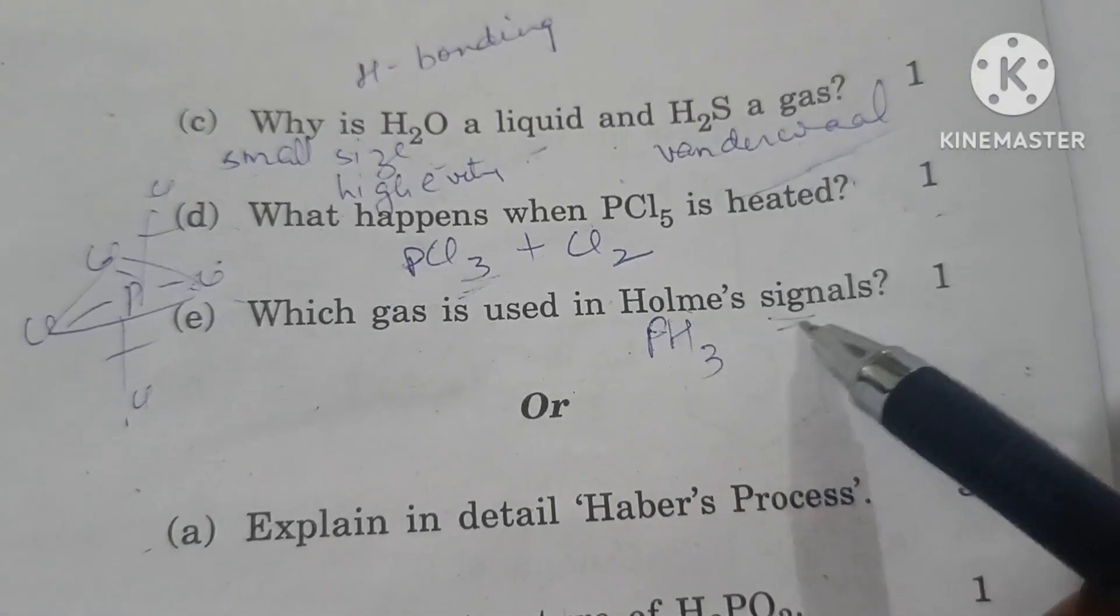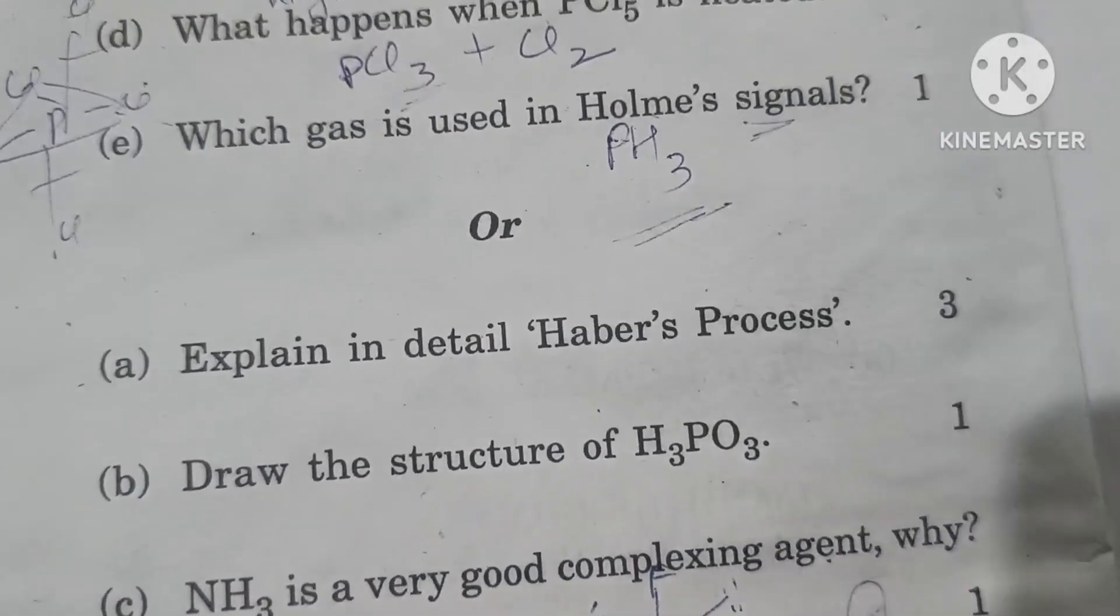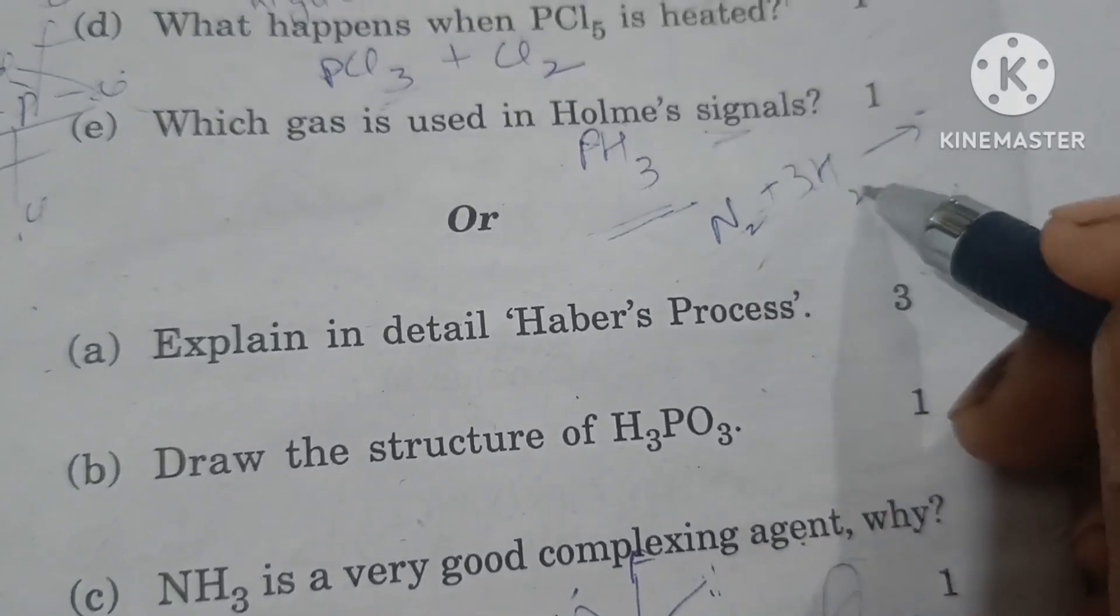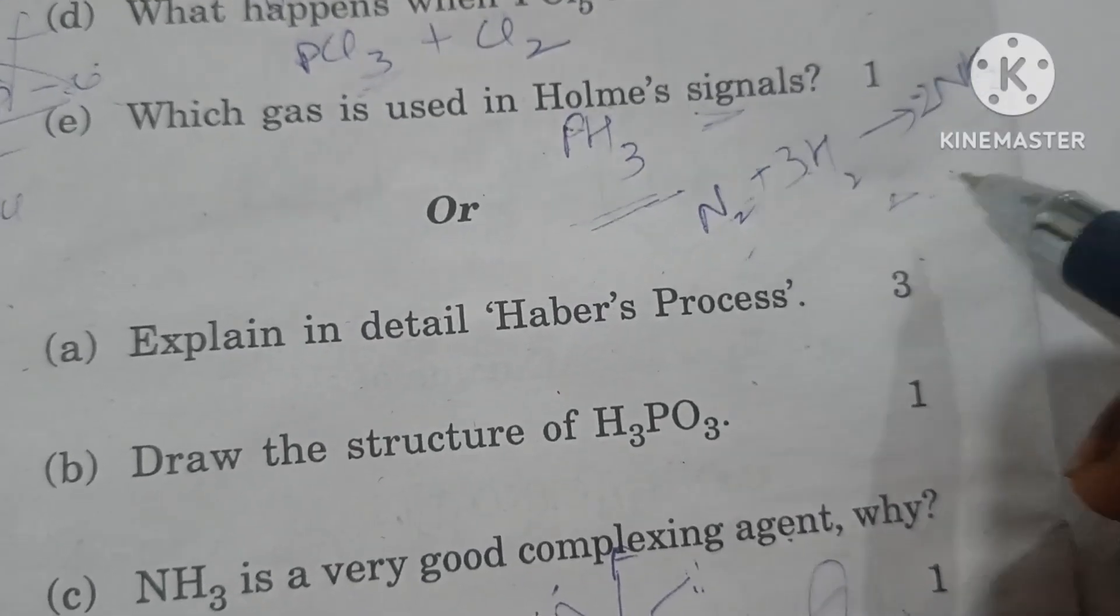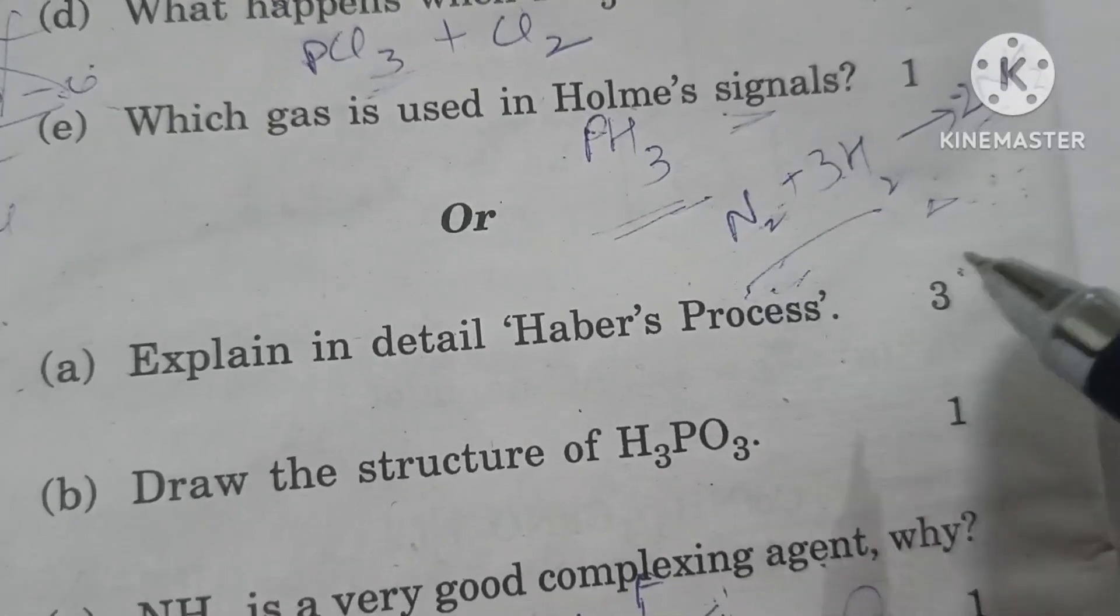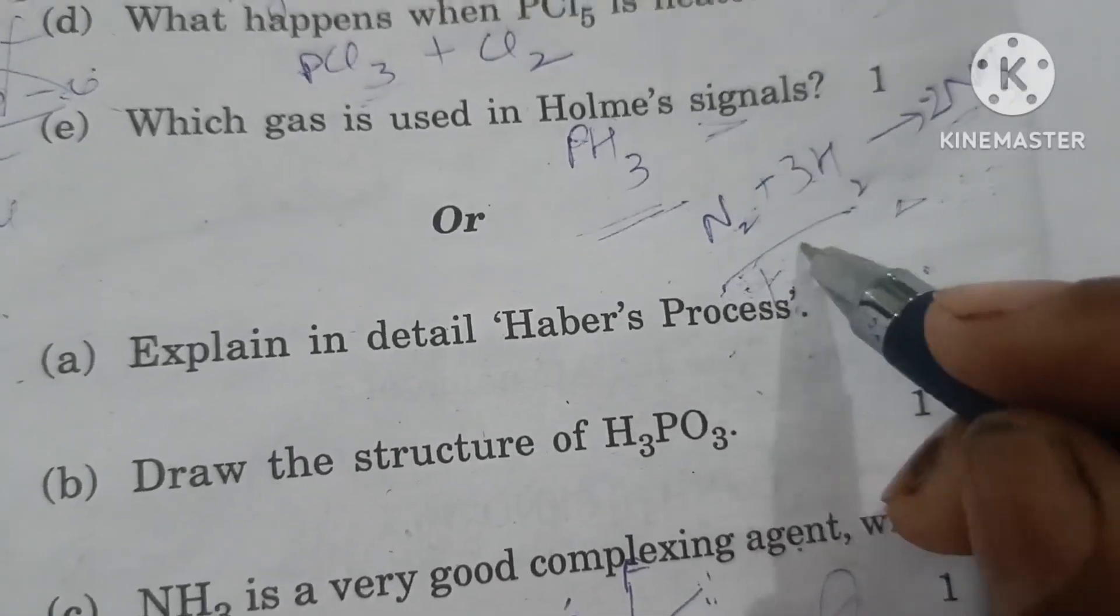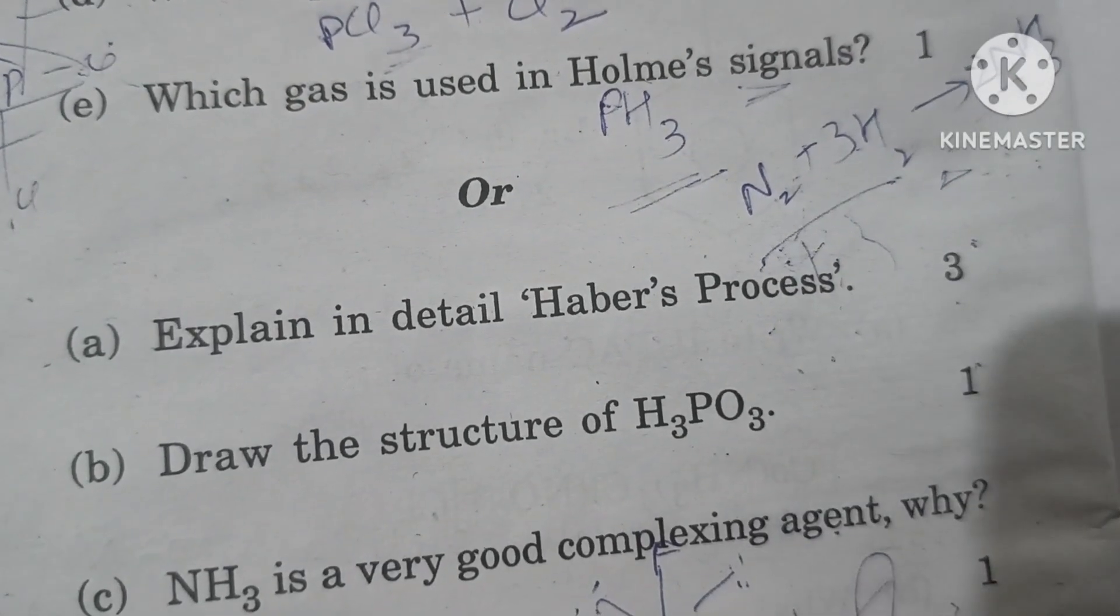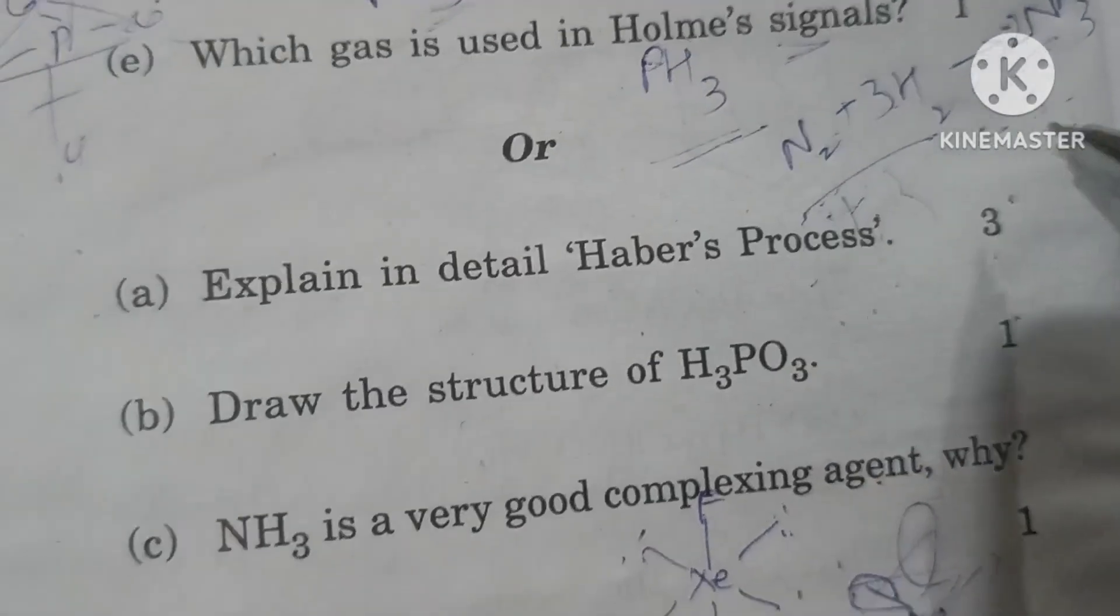Which gas is used in Holmes signal? Answer is PH3. Then explain in detail Haber's process. In Haber's process, nitrogen combines with hydrogen to form ammonia. This is an exothermic reaction at high pressure where the product forms. In the flow chart, nitrogen and hydrogen are combined in 1 to 3 ratio, then compressed. Ammonia gas is liquefied under pressure, whereas nitrogen and hydrogen are recycled.